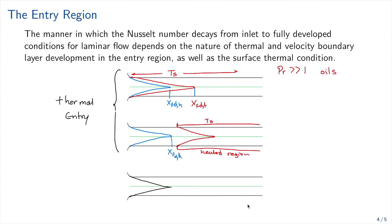The other case in which both are at the same distance, so x fully developed thermally and x fully developed hydraulically at the same distance, so we call that a combined. So this is going to be called a combined entry. For this case, Prandtl is approximately equal to one. So this is the case of gases.